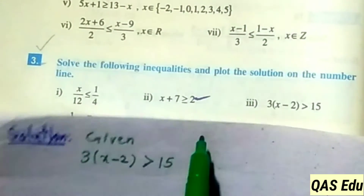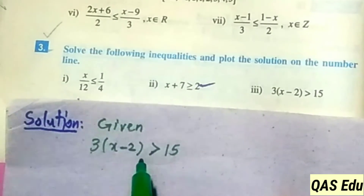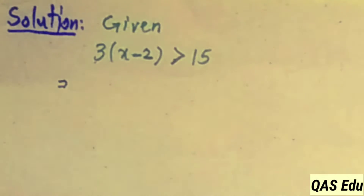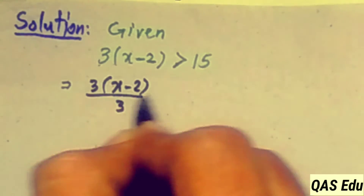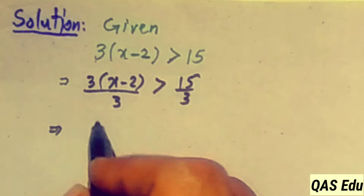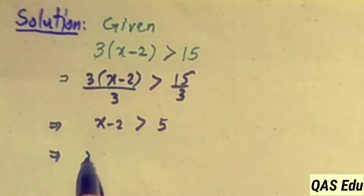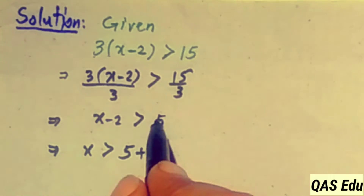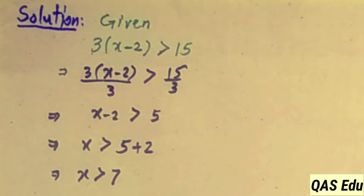Part 3: We have the linear inequality 3 into x minus 2 is greater than 15. We divide both sides by 3: 3 cancels, giving x minus 2 greater than 5. Then moving minus 2 to the right side as plus 2: x is greater than 5 plus 2, which equals 7. So x is greater than 7.